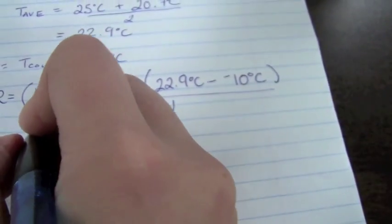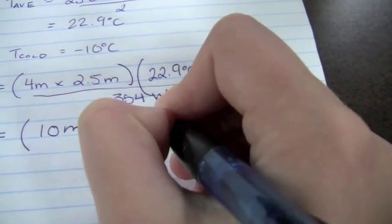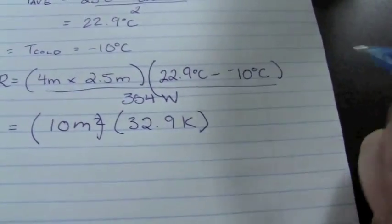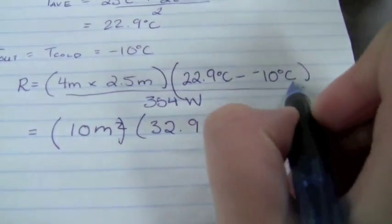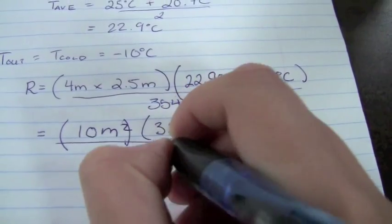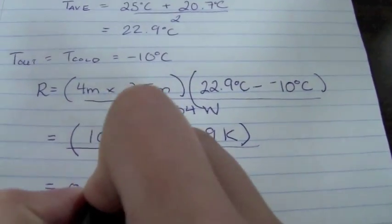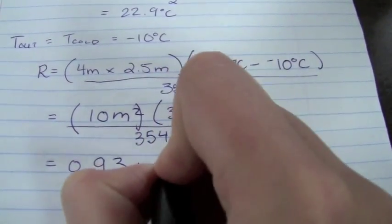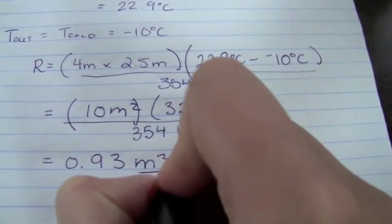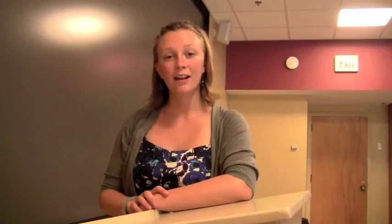If we continue on with this, we end up with a value of 10 meters squared times 32.9 Kelvin, seeing as you remember, a temperature difference is the same whether it's in Celsius or in Kelvin, all divided by 354 watts. This means that our value for our R value is 0.93 meters squared times Kelvin divided by joules times seconds. As you remember, watt is simply a joule per second.